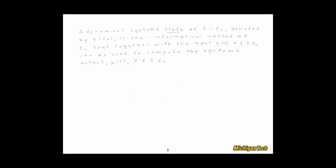And here is what it is. So I've just written this definition out ahead of time so that I wouldn't have to sit there and scrawl it across the screen. And I'll just read through it and explain some of the pieces. So a state, a dynamical system state at t equal t0, denoted by x, the vector, at t0, is the information needed at t0 that together with the input u of t for all t greater than or equal to t0 can be used to compute the system's output y of t for all t greater than or equal to t0. So what it's saying is that it is all the information that you need that if you also have the input for all time, you can then calculate the output for all time.